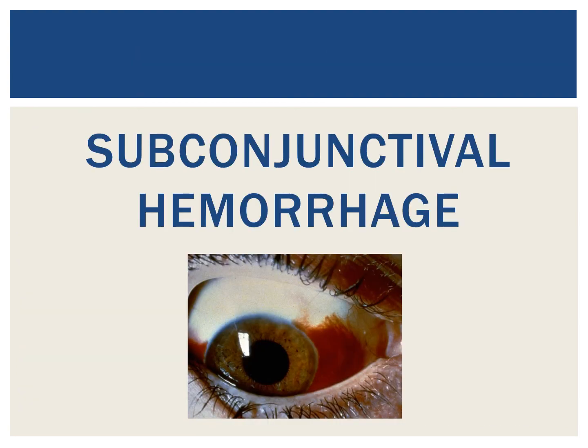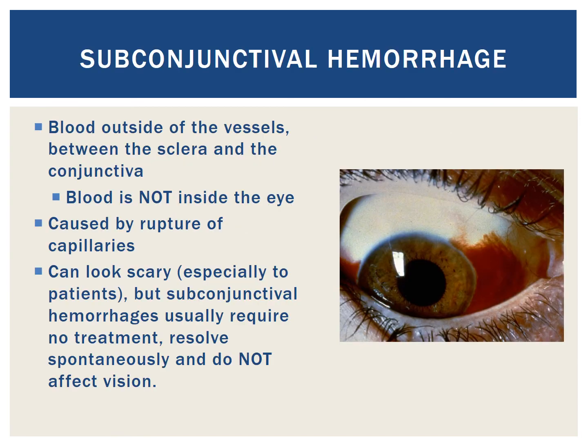That does it for common and salient etiologies of conjunctival injection. Next, we will look at subconjunctival hemorrhage. As a reminder, in subconjunctival hemorrhage, the blood is outside of conjunctival vessels and between the sclera and the conjunctiva, causing the blotchy red pattern visible here. Importantly, the blood is not inside of the eye. Subconjunctival hemorrhage is due to the rupture of conjunctival capillaries. Common causes include hypertension, valsalva, trauma, and blood thinners. Subconjunctival hemorrhages can be drastic appearing, but they often do not require treatment, resolve spontaneously, and do not affect vision.